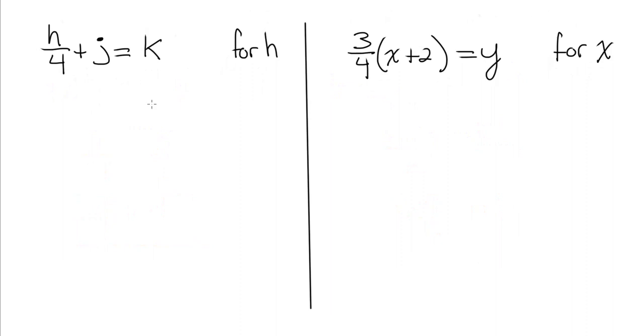Let's look at two more examples. This first example: h over four plus j equals k, and we want to solve for h. This is a two-step equation, so we need to follow that process. Step one in solving a two-step equation is to undo addition or subtraction. Right now, I need to get rid of this plus j by subtracting j from both sides. j minus j cancels out, leaving me with h over four on the left, and on the right, k minus j.